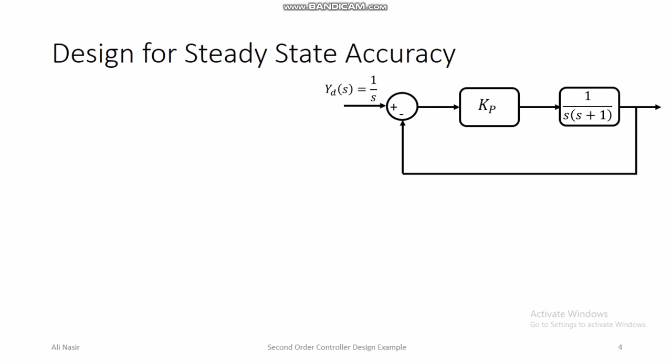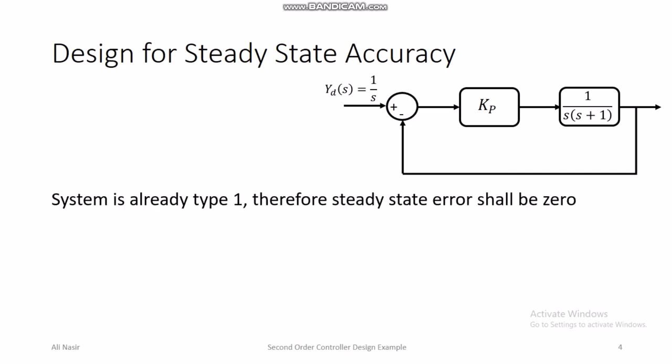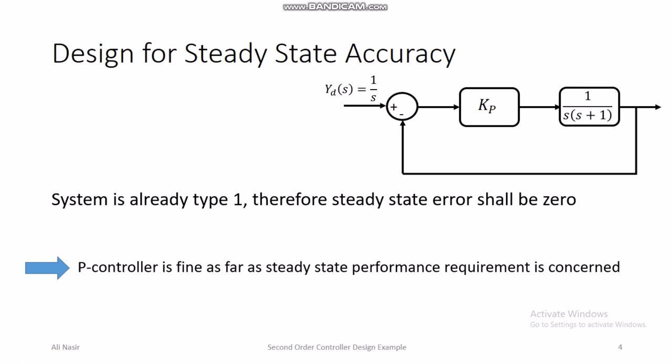Next we design for steady state accuracy. We require zero steady state error due to step input for the closed loop system. Luckily, this system is of Type 1, so without designing a special controller we already achieve zero steady state error with respect to step input — because for Type 1 systems, steady state error with respect to step is always zero. So the P controller is fine for steady state performance.